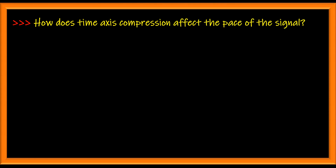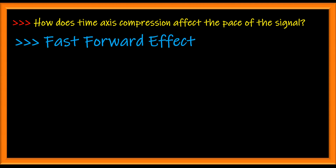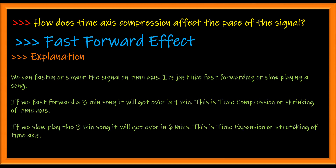How does time axis compression affect the pace of the signal? Time axis compression produces what we call a fast-forward effect on your signal. A three-minute music track will be played in just one minute, meaning you have to fast-forward the signal. So time axis compression does affect the pace of the signal.